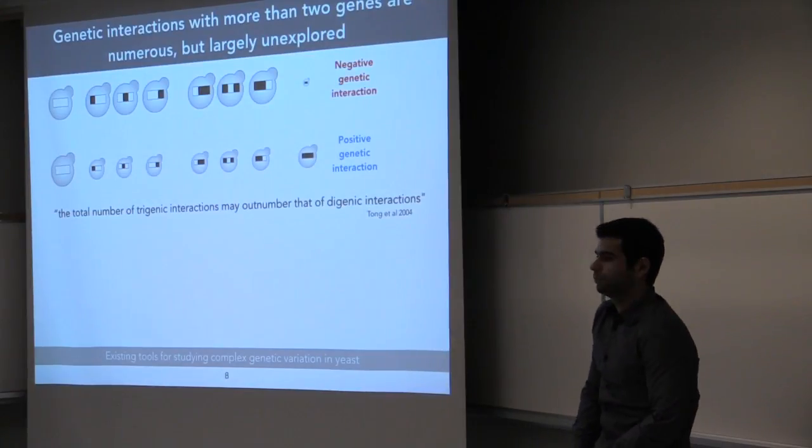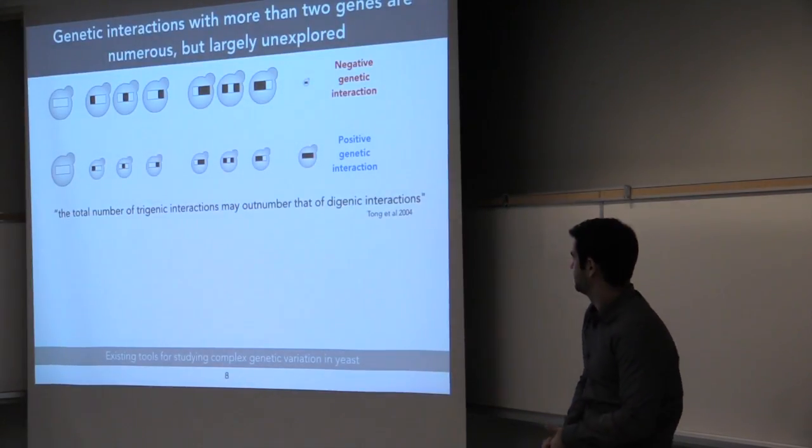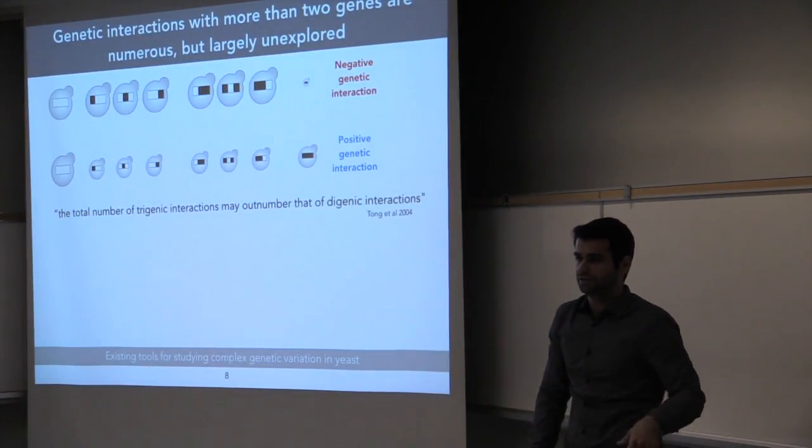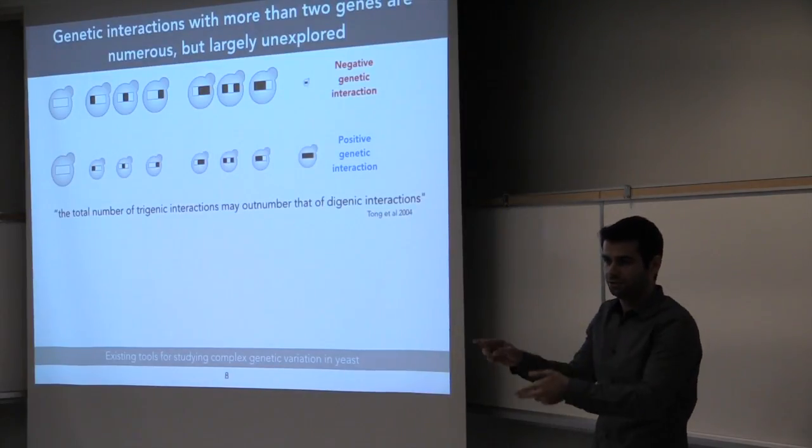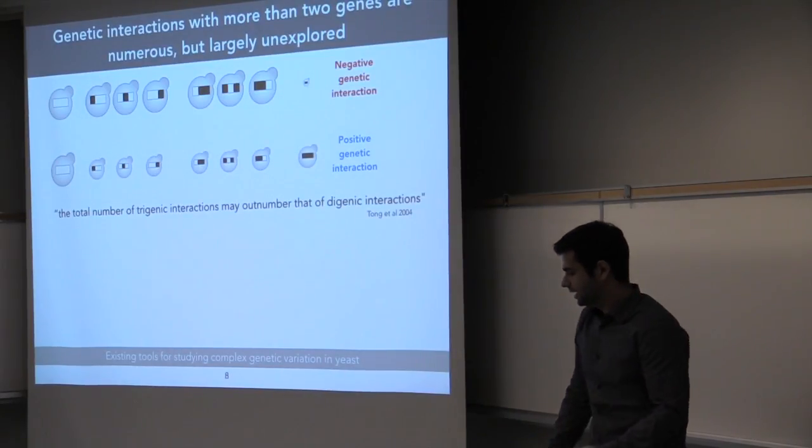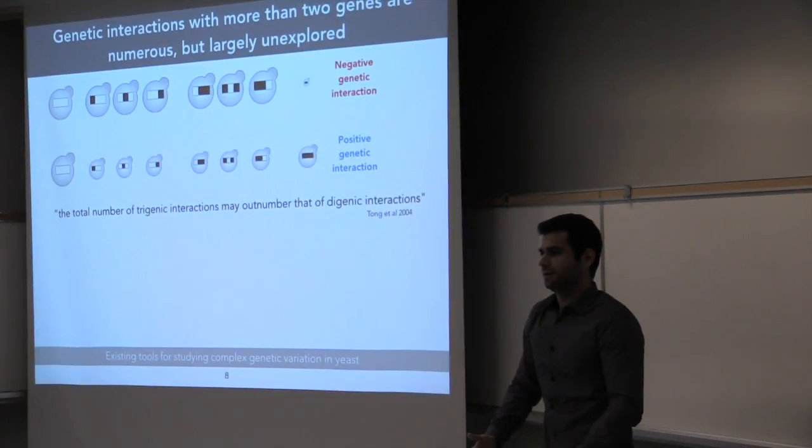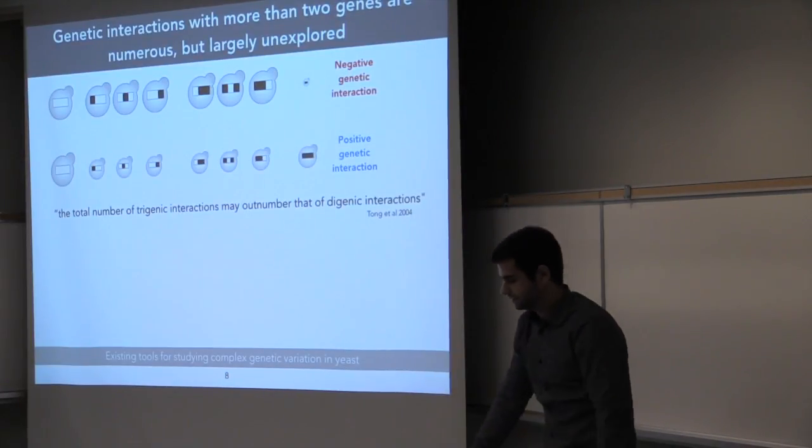It's estimated, well, probably now proven that the total number of trigenic interactions vastly outnumbers that of these two gene interactions which are already known. But it's just very difficult to study these because the number of combinations are just vast.